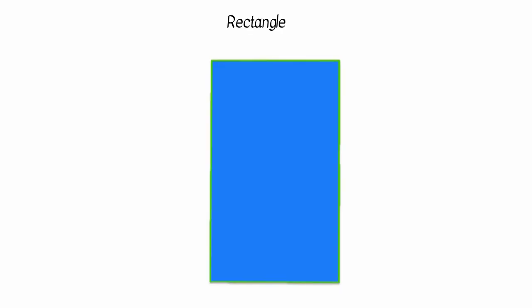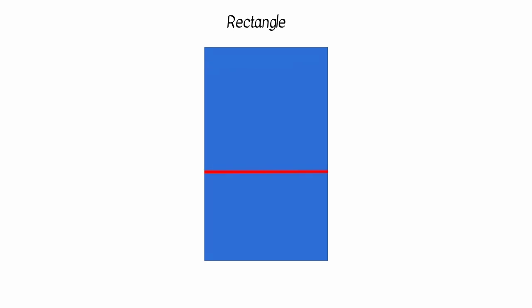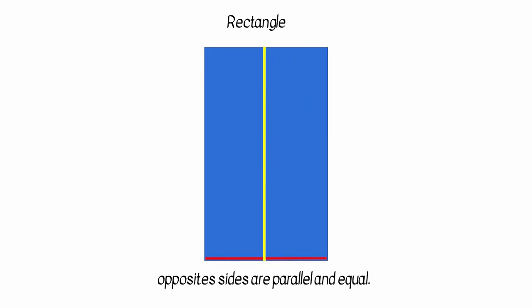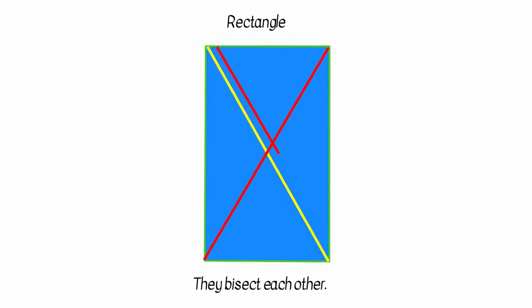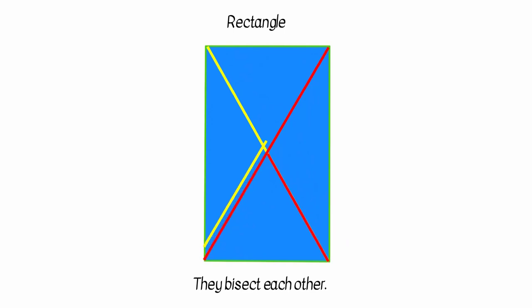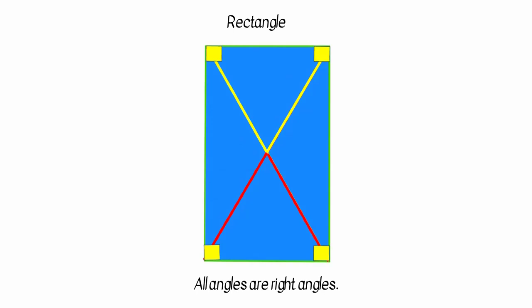In a parallelogram, if all the four angles become equal, what we get is a rectangle. A rectangle is an equiangular parallelogram. Opposite sides are parallel and equal. Diagonals are equal and they bisect each other. All four angles are equal — each angle will be a right angle, as we divide 360 degrees by 4.